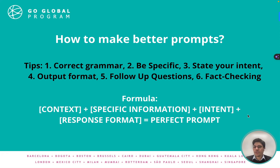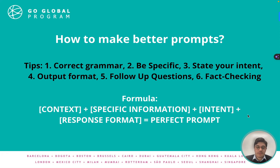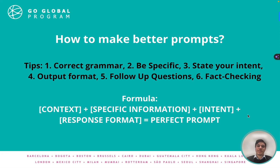And six: fact-checking. Especially if you're using ChatGPT, it's not very good for sources. You should always double-check. Ask 'fact-check this' or 'where can I find the source for this?' You can also use other tools like Perplexity AI, because it provides the sources and links for each answer it outputs to you.